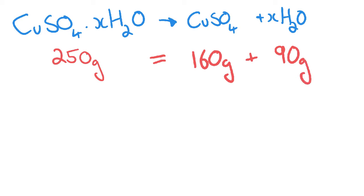So whenever we were looking at our empirical formula calculations at the start of this topic, we would have worked out the number of moles of each element. But this time we want to work out the number of moles of the anhydrous salt part, so the copper sulfate, and the number of moles of our water part.